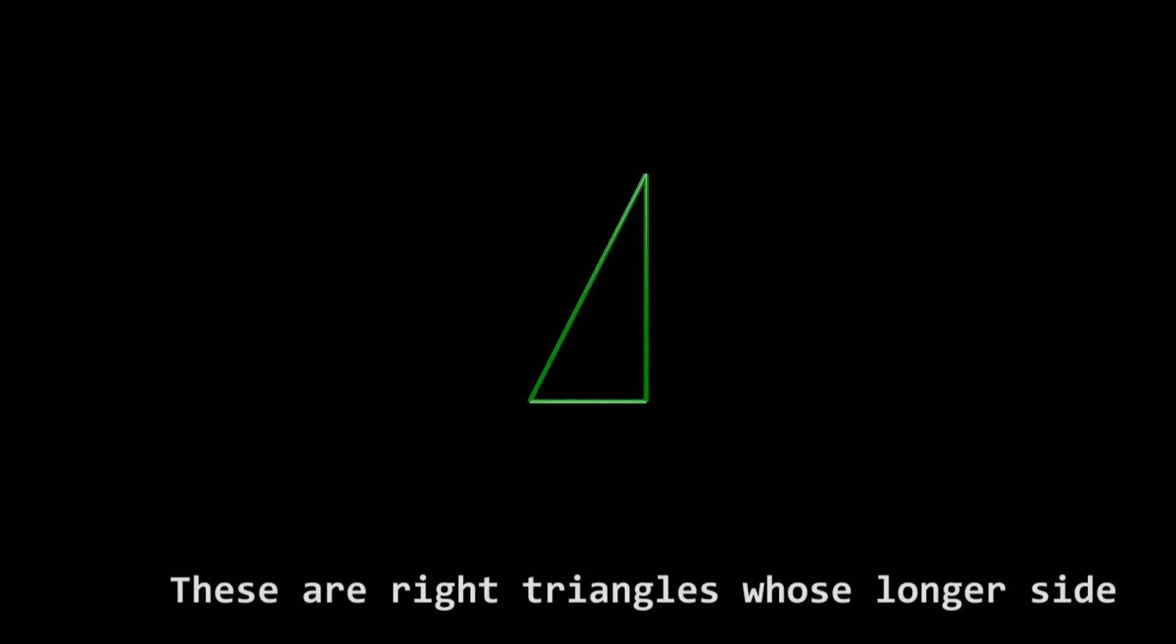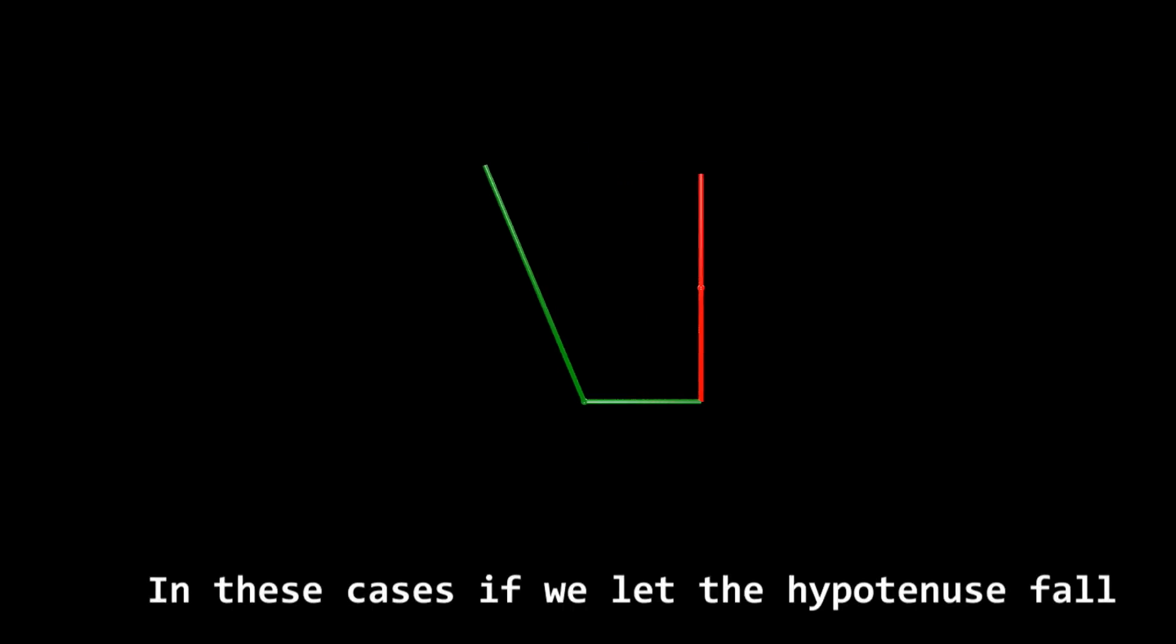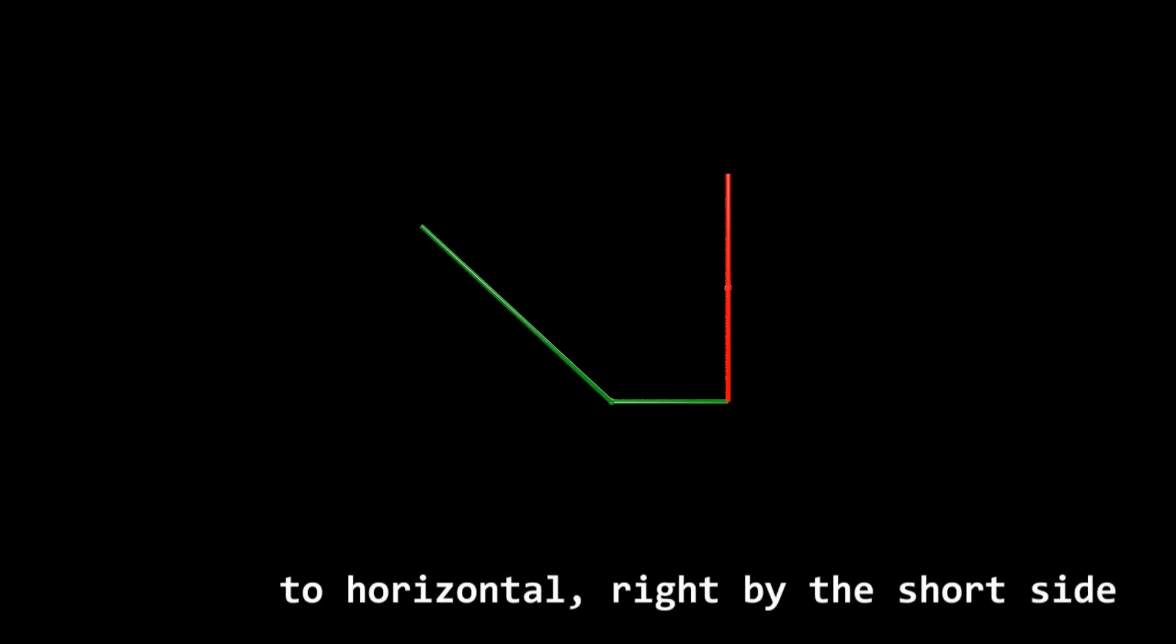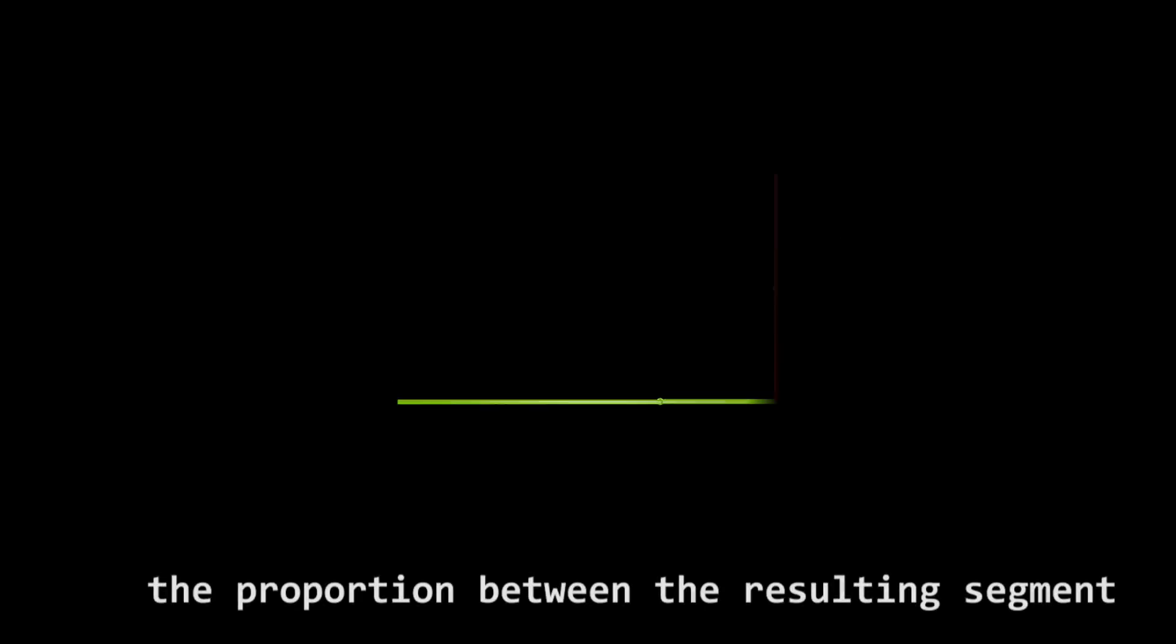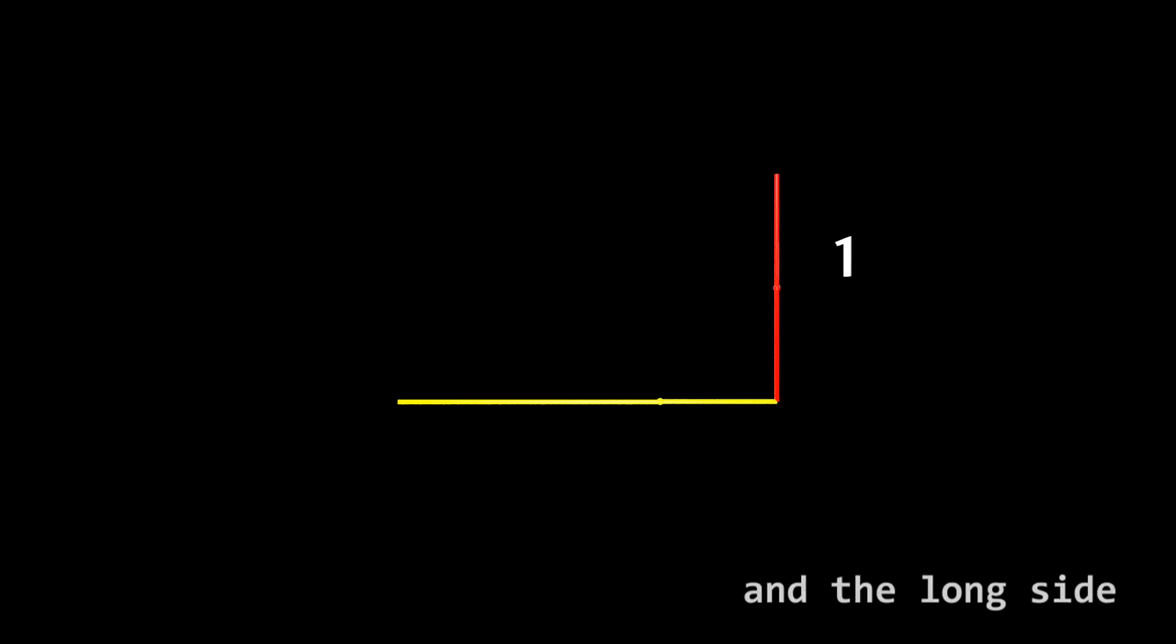These are right triangles whose longer side is twice the short side. In these cases, we let the hypotenuse fall to horizontal, right by the short side. The proportion between the resulting segment and the long side is the golden ratio.